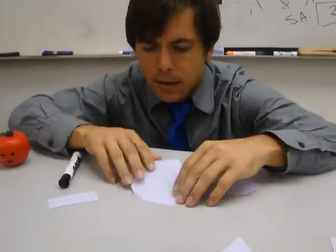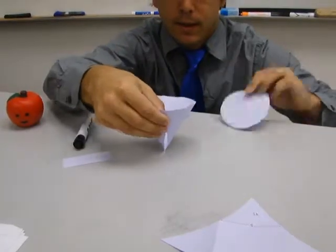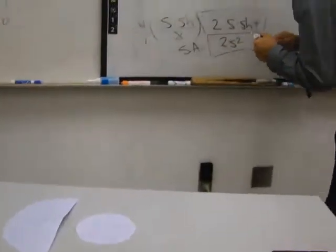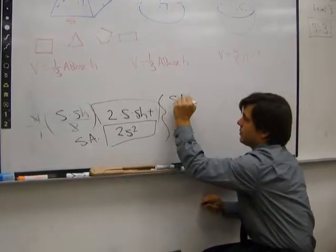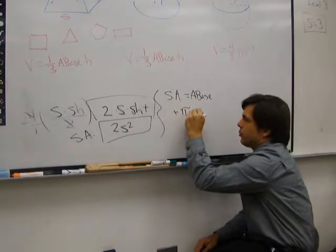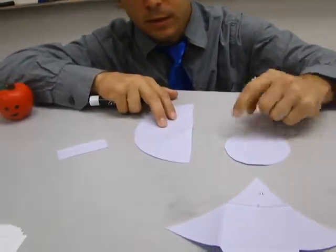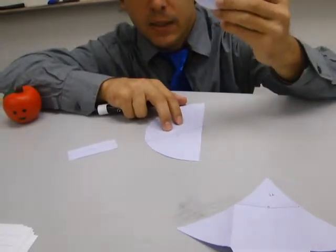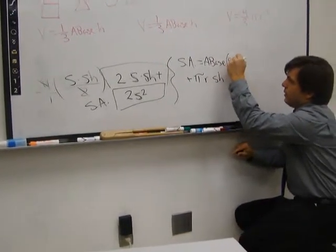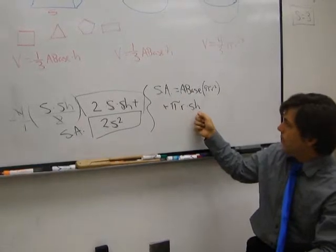The cone is made of a circle, and then a sector of a larger circle, because this distance here has to wrap accurately around this circle. So, without explanation, the surface area is going to be equal to the area of the base plus pi times the radius times the slant height. Now, the radius is the radius of this circle. So it's this times this times pi plus the area of the base, which is the area of the circle. So that's pi r squared. In this case, base means pi r squared.